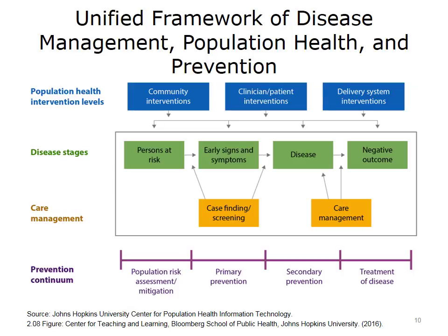This graphic takes the previous one a step further by providing a unified framework that talks about disease management — some people call it chronic care population management — but it also talks about broader community population health and prevention. It tries to combine perspectives across the three levels of intervention discussed: the clinical level, delivery system level, and community level. This graphic provides a framework for understanding, from the clinical perspective, stages of the disease, the levels of population health interventions, the care management process, and the prevention continuum.